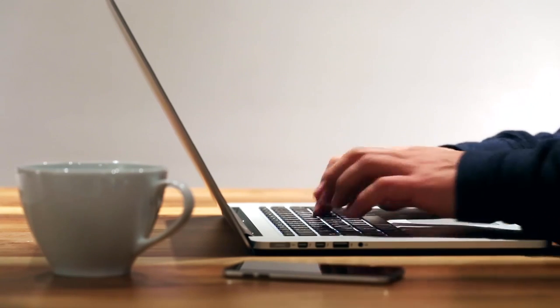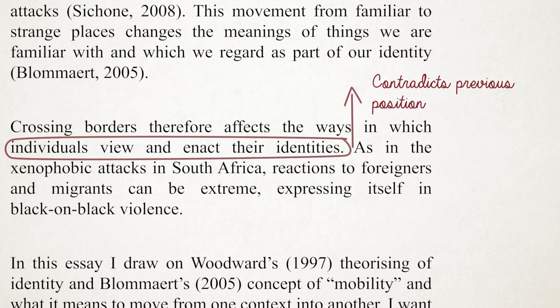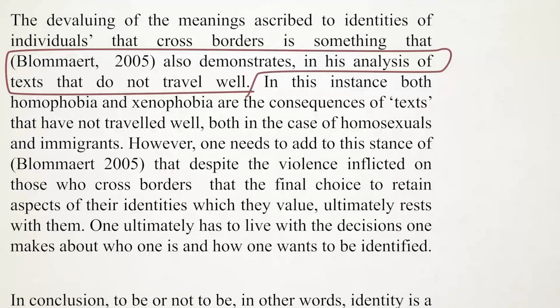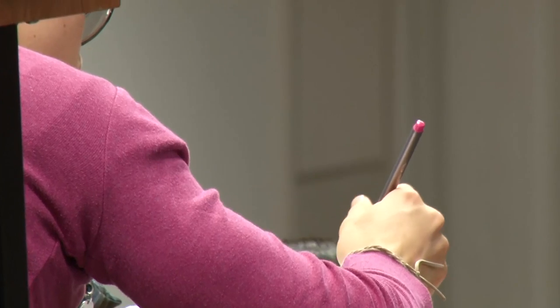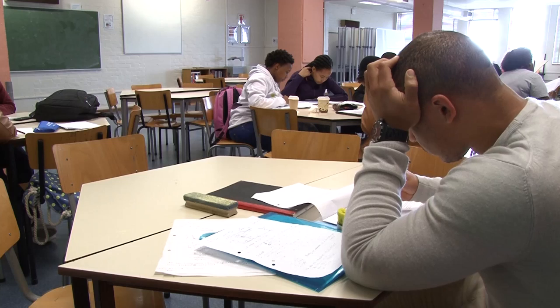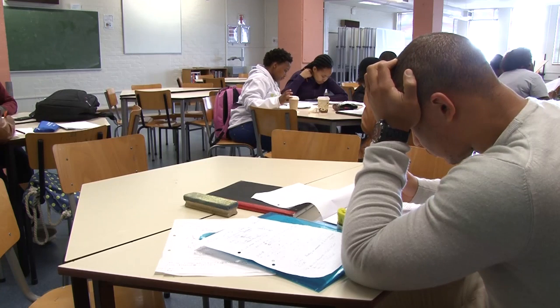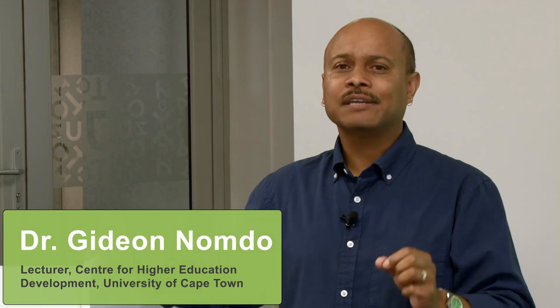Unlike creative writing, an academic essay requires rational argument and convincing evidence to back up statements that are made. So academic writing has its own set of norms and practices. However, sometimes these norms and practices remain hidden, and so students are not always aware as to what's required of them when they are expected to write an essay at university.